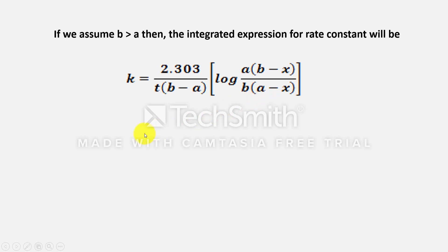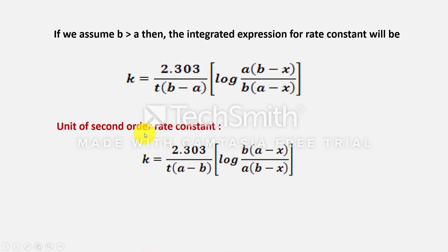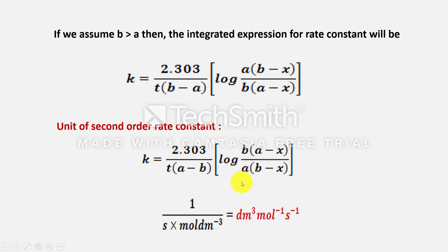Now let us see what will be the unit for rate constant in a second order reaction. The concentration terms in the numerator and denominator cancel, leaving 1/time. For concentration in mole per dm³ and time in seconds, the unit is dm³ mol⁻¹ s⁻¹.